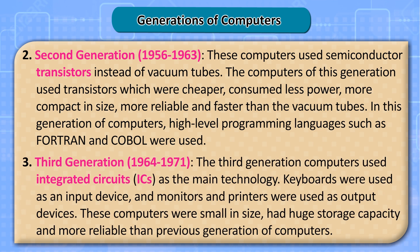Third Generation (1964–1971). The third generation computers used integrated circuits (ICs) as the main technology. Keyboards were used as an input device, and monitors and printers were used as output devices. These computers were small in size, had huge storage capacity, and were more reliable than previous generation computers.